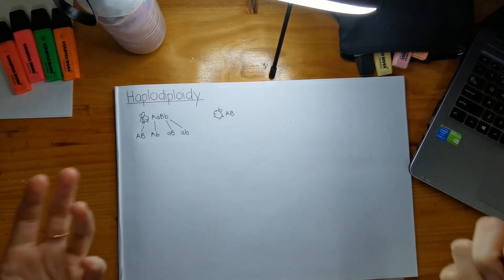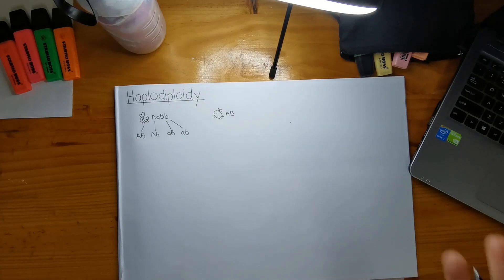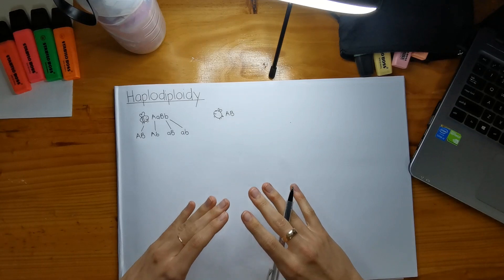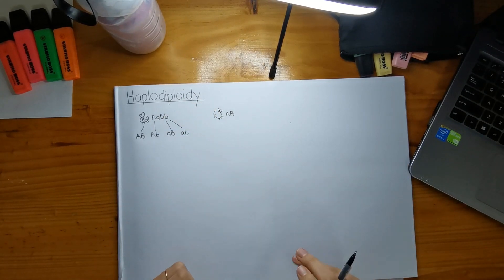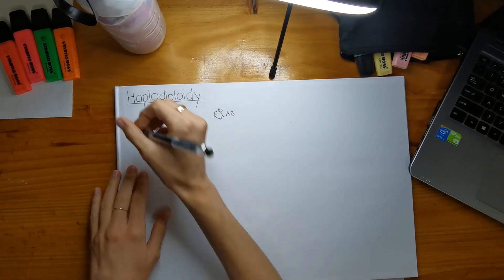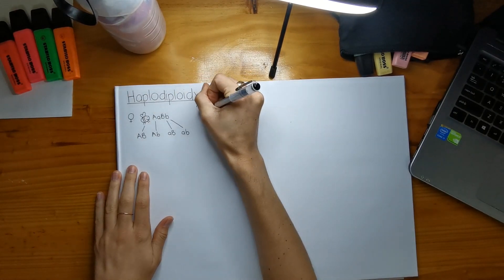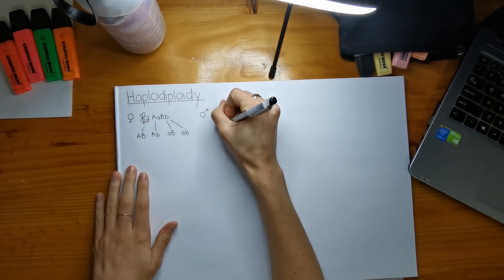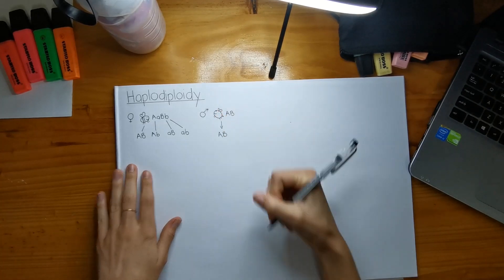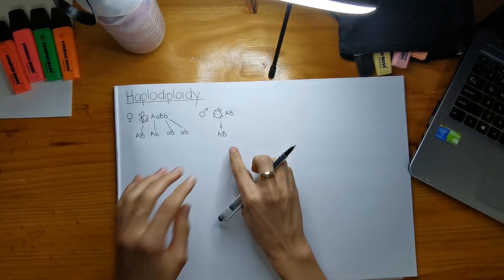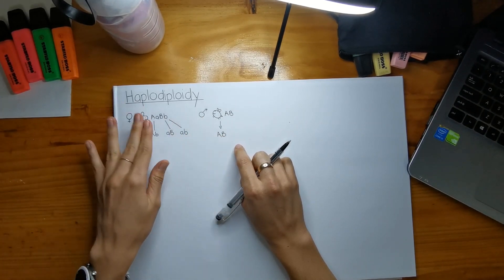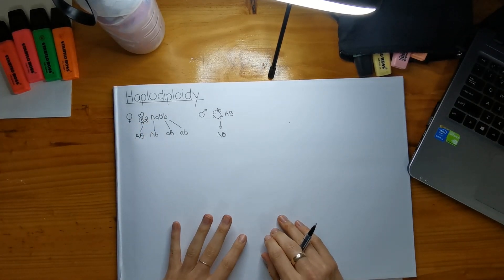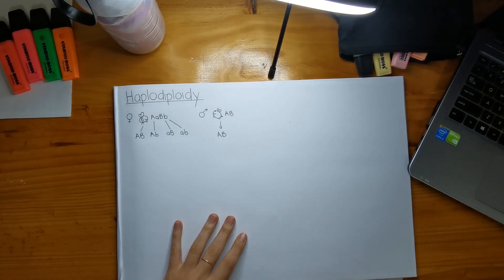Males only received one chromosome set from their mothers, so that AB genotype is literally just an egg that grew and became a male. When the male has to produce gametes, he doesn't really undergo meiosis the way the female did — he ends up just making AB gametes. They don't separate, because if they did, the bee offspring would have serious biological problems.